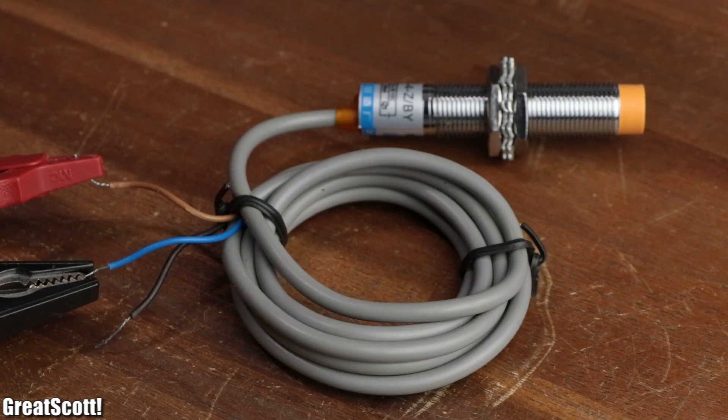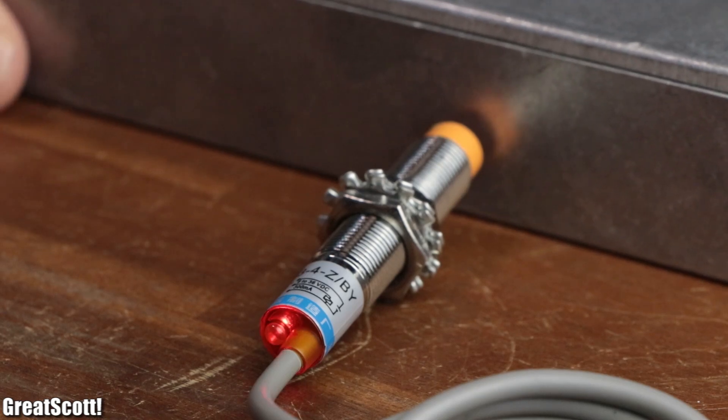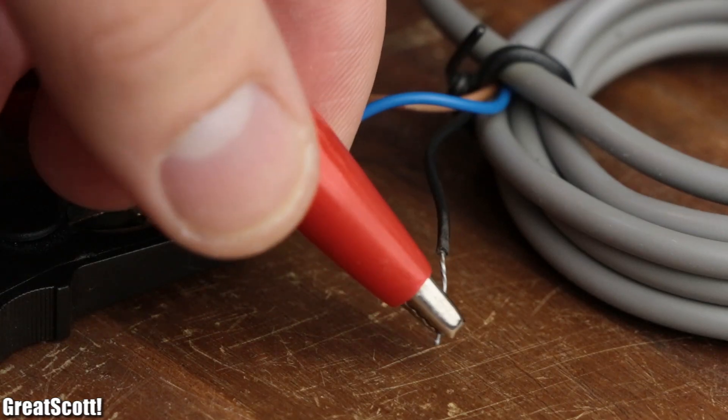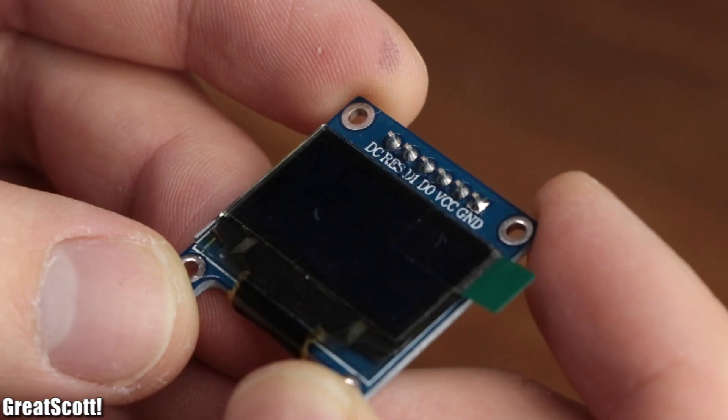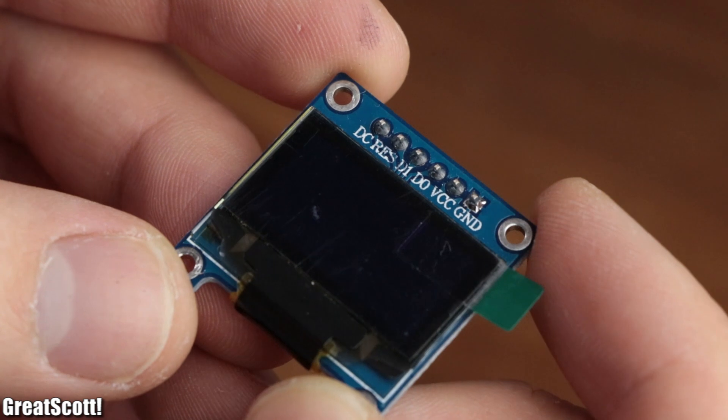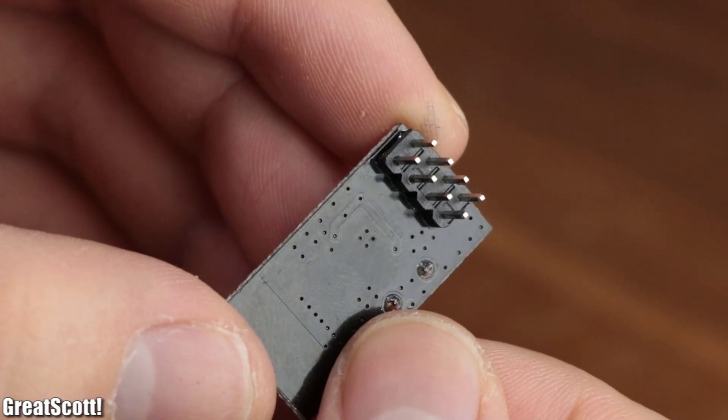Something like the proximity sensor is pretty straightforward to connect, since it only has one output pin that either connects to the supply voltage or not. But if we take a closer look at the other components, we can see that they feature quite a few pins that need to connect to the Arduino.